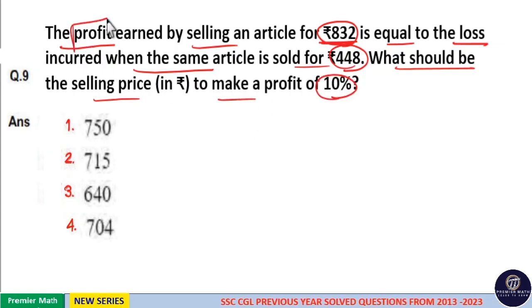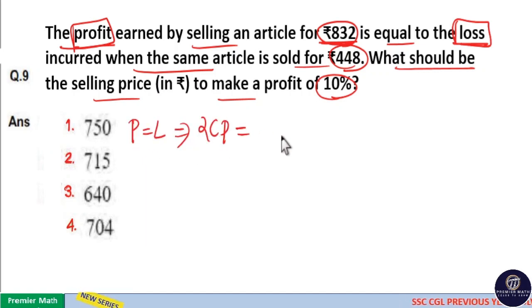Here profit is equal to loss. Profit equals loss means 2CP is equal to the sum of selling prices. That is 832 plus 448, which is equal...